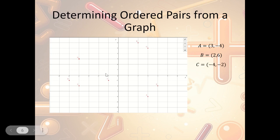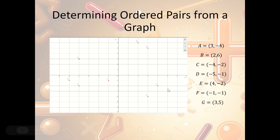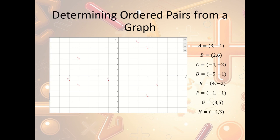Point G is 3 on x and 5 on y, so G is 3, 5. Point H is negative 4 on x and 3 on y, so H is negative 4, 3. And that's how I can look at graphs of coordinates and be able to figure out what their ordered pairs are.